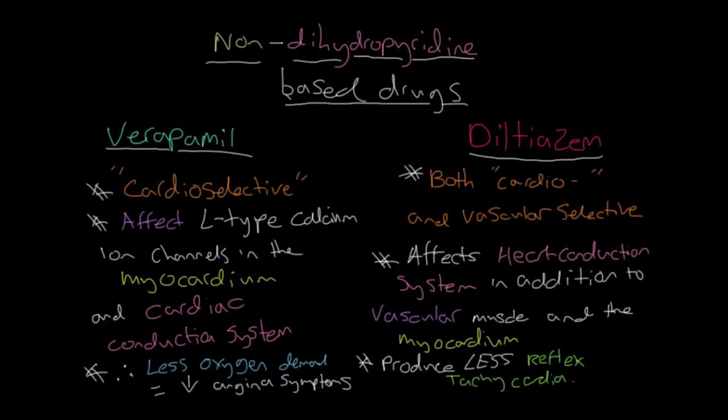In the heart, verapamil causes a negative inotropic effect, reducing the amount of calcium able to enter cardiac myocytes and therefore reducing the force of contraction of the heart muscle. This leads to less oxygen demand and produces less reflex tachycardia as the sympathetic nervous system is unable to exert its effect. It doesn't matter how much the beta-adrenoceptors are stimulated, if calcium can't get into the cell anyway, then the sino-atrial node isn't going to depolarize and the heart rate isn't going to speed up, which would cause tachycardia and lead to angina symptoms.